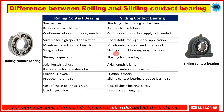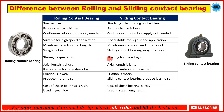For rolling contact bearing, weight is low, and for sliding contact bearing, weight is more. The important point here is that for rolling contact bearing the starting torque is low, and for sliding contact bearing the starting torque is high.